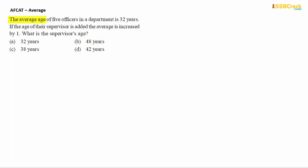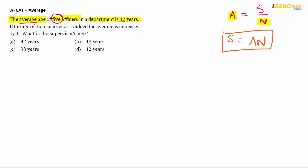Next question: The average age of five officers in a department is 32 years. So the average of five officers is 32. Applying the formula A = S/N, we know the average and the number, so we can easily calculate the sum. Sum S = Average × N = 32 × 5 = 160. This shortcut — S = A × N — is very important to remember.